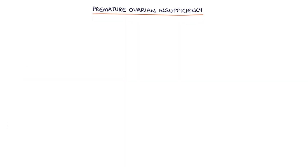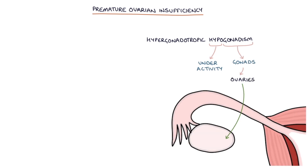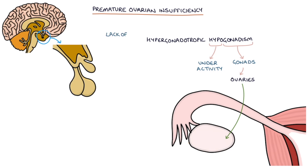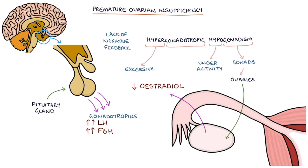Premature ovarian insufficiency is characterized by hypergonadotropic hypogonadism. This is where underactivity of the gonads — in this case the ovaries, which is hypogonadism — means there's a lack of negative feedback on the pituitary gland, resulting in excessive amounts of gonadotropins, which we call hypergonadotropism. The gonadotropins are LH and FSH. Hormonal analysis by blood tests will show a raised LH and FSH and a low estradiol or estrogen level.